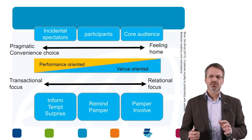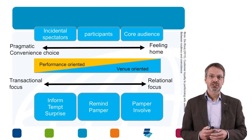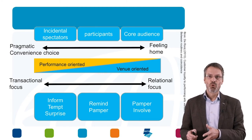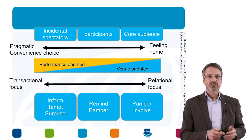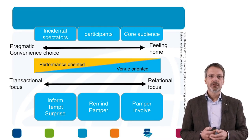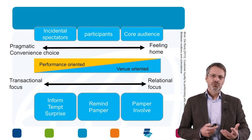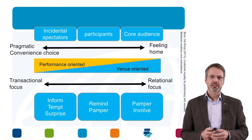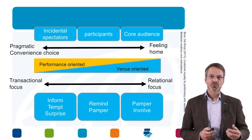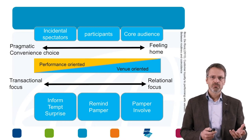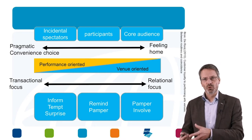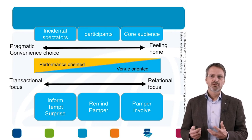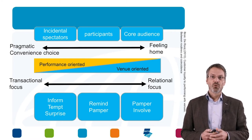There is a key difference in relationships: the core audience has a relational focus, while incidental spectators tend to have a transactional focus. So strategies should differ. For incidental spectators, it's important to inform, tempt, and surprise them. For the core audience, it's important to pamper them, involve them, and create engagement with your organisation.